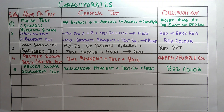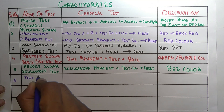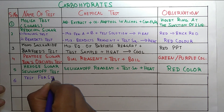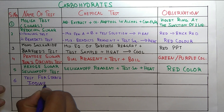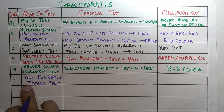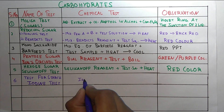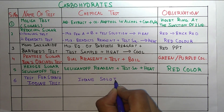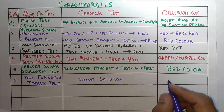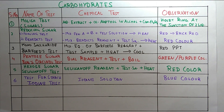The sixth test of carbohydrates is the test for starch, which is the iodine test. In this test, we use iodine solution for the identification of starch. The color produced is blue.